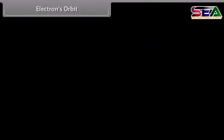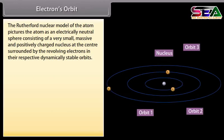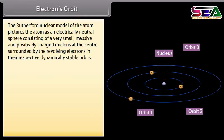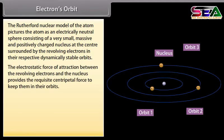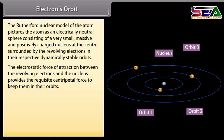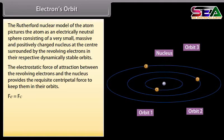Electron orbit: The Rutherford nuclear model pictures the atom as an electrically neutral sphere consisting of a very small, massive and positively charged nucleus at the center, surrounded by revolving electrons in their respective dynamically stable orbits. The electrostatic force of attraction between the revolving electrons and the nucleus provides the requisite centripetal force to keep them in their orbits: Fe = Fc. Putting in their respective values we get the orbital equation.